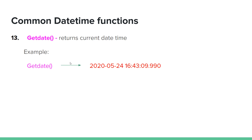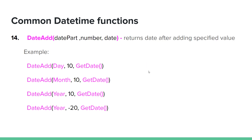Now we have date and time functions. The current date time is the system date time. GETDATE returns the current system date and time. In the second section, we will specify the date part.